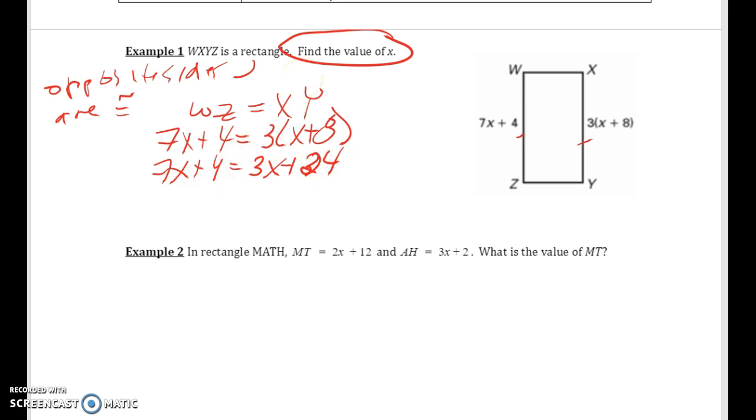Subtracting 3x from both sides gives me 4x, and moving our non-x terms to the other side will give me 20. So x equals 5 when we divide both sides by 4.